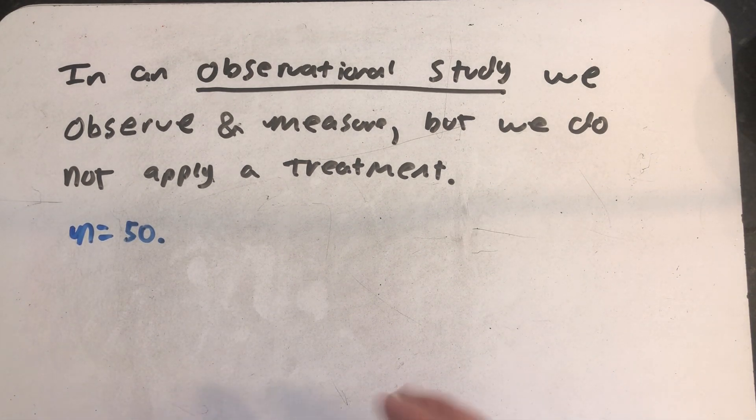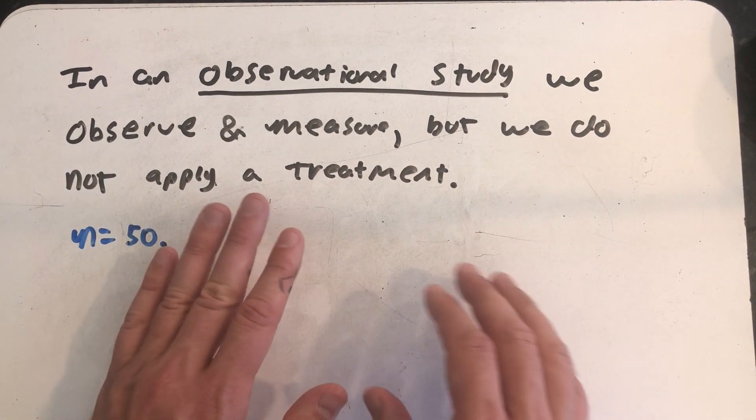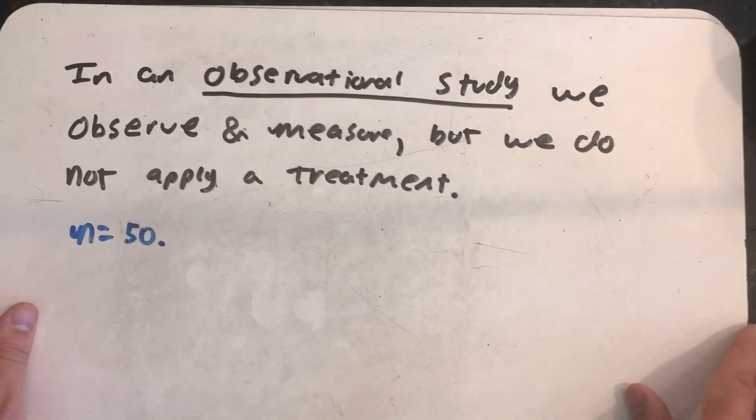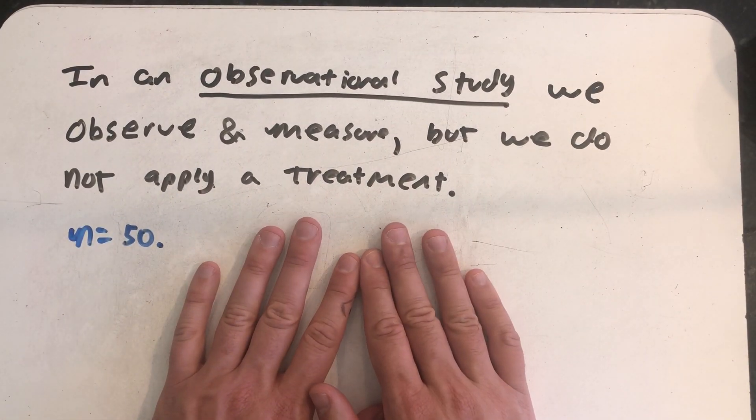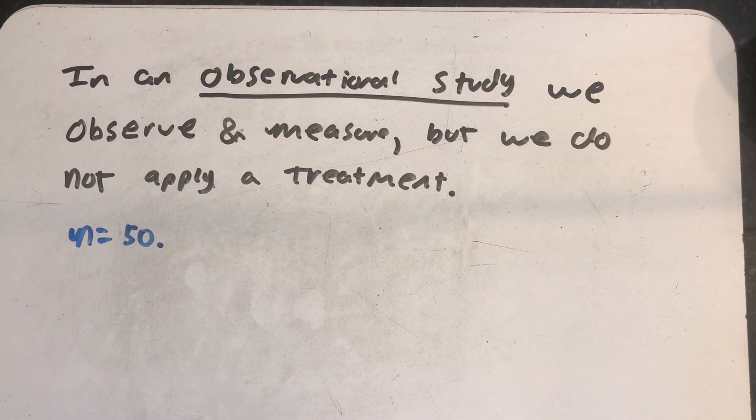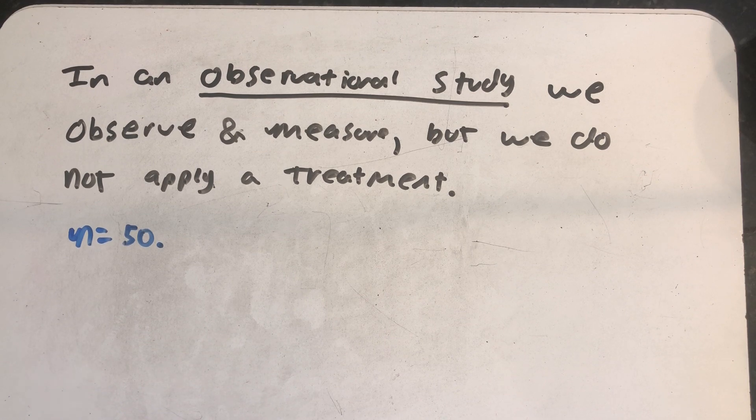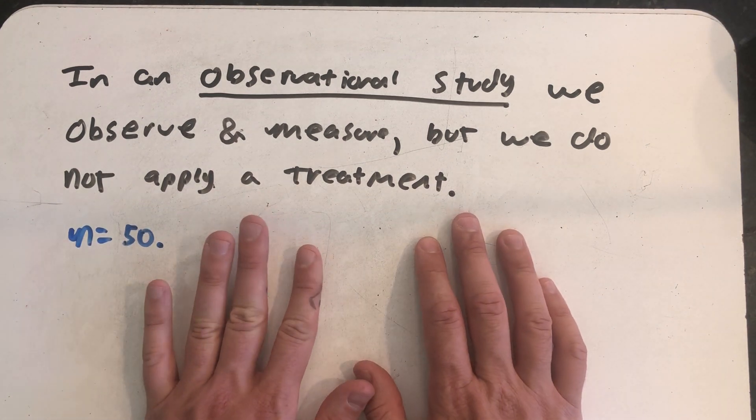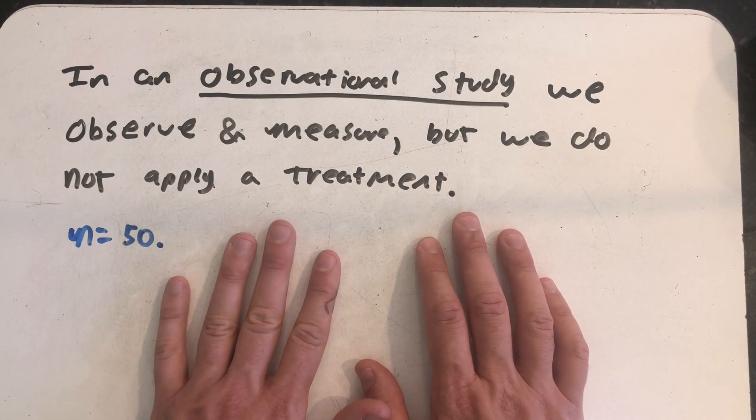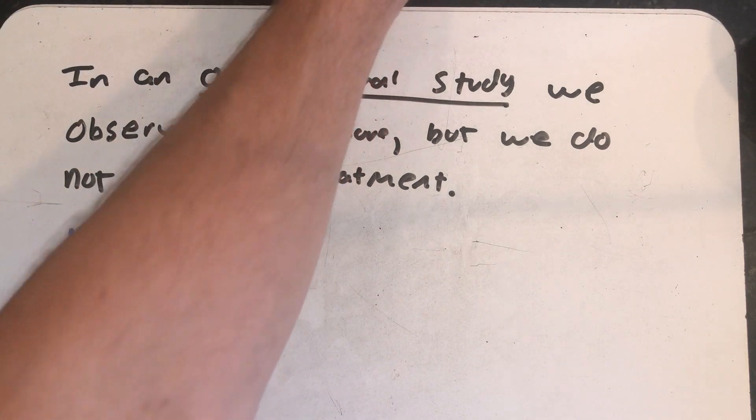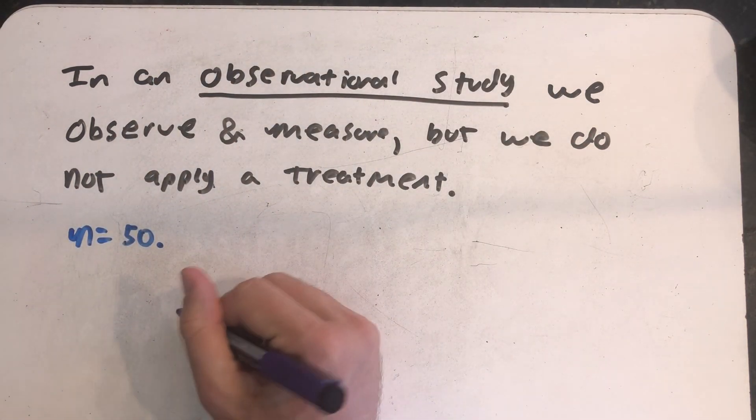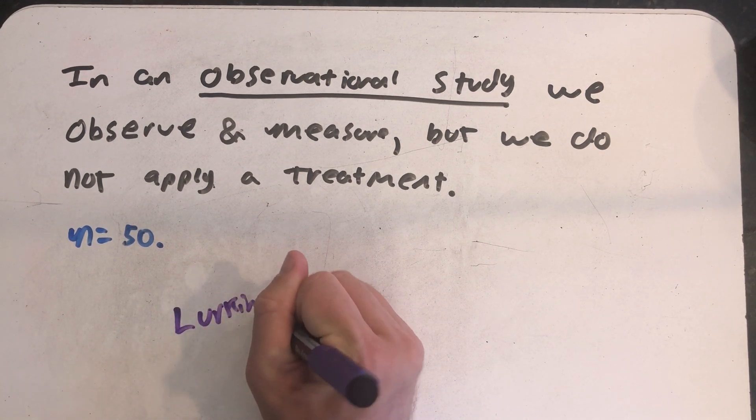So sometimes it's easier or you get better data from an experiment where it might be easier to do an observational study. That's the main difference between an experiment and an observational study. In an experiment, you apply treatment and have a lot of control over what's going on. In an observational study, you just observe and measure, and you might not have as much control of other variables that might pop into your study. Those are called lurking variables.